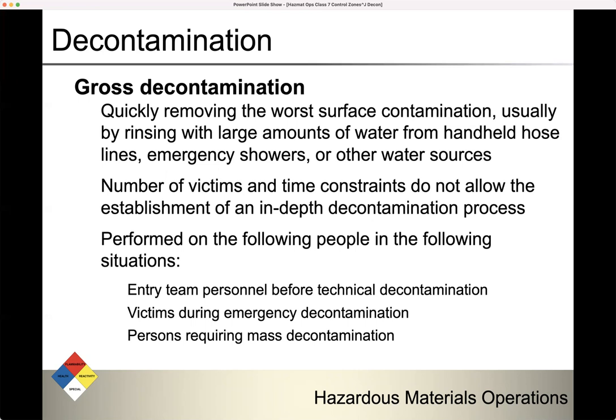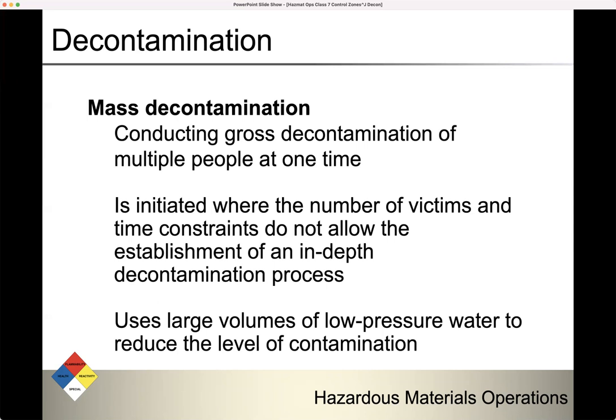Mass decontamination is conducting gross decontamination of multiple people at one time. You can have gross decontamination for a single person or multiple people — that would be mass decontamination. You don't do mass technical decontamination. You perform mass decontamination where the number of victims and time constraints don't allow an in-depth process, using large volumes of low-pressure water to reduce the level of contamination.